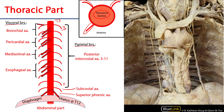The visceral branches are fairly straightforward. We have bronchial arteries. The bronchial arteries are of particular interest because they're going to serve the bronchi and the tracheobronchial tree. Everything proximal to the respiratory bronchioles can be served by these arteries. They'll also serve the superior portion of the esophagus within the thorax.